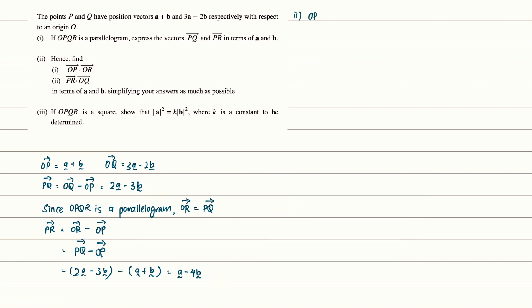In part 2, we are required to find vector OP dot vector OR. By substituting the values from part 1, this equals A plus B dot 2A minus 3B.